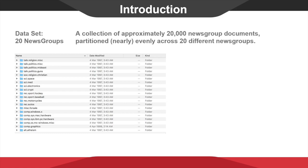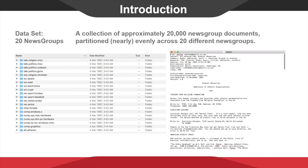There are currently three different versions of the dataset, and we chose the version sorted by date, with duplicate documents removed. We originally decided in our proposal to classify them into six groups first and do the classification inside each group. But in the process, we found that there's actually not much point in doing this. Here is a sample of the tags we have.